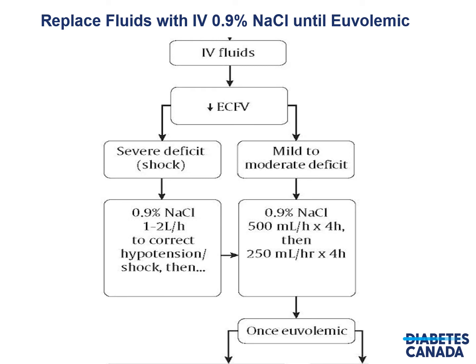One usually replaces fluids with normal saline until the patient is euvolemic. If they're in severe shock, use normal saline 1 to 2 liters per hour to correct hypotension, then move to the mild to moderate approach: 500 mL per hour for 4 hours, then 250 mL per hour for 4 hours. These are suggestions that depend on the size of the patient and their clinical context.